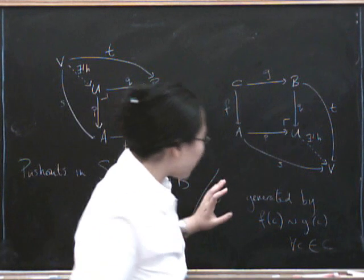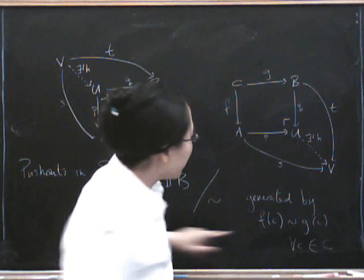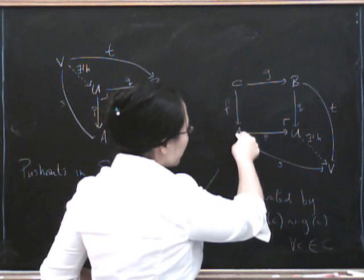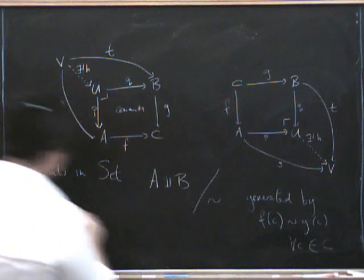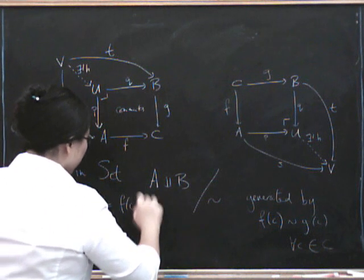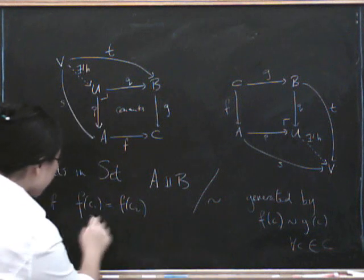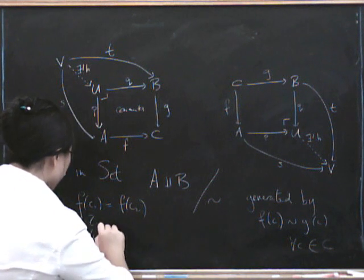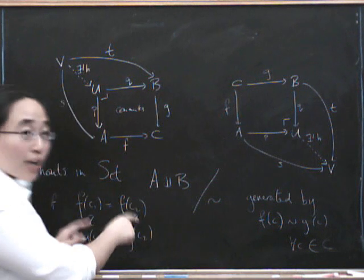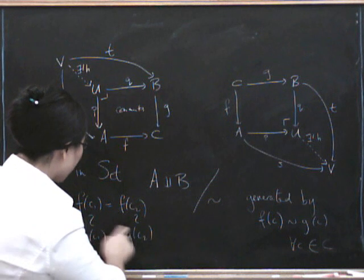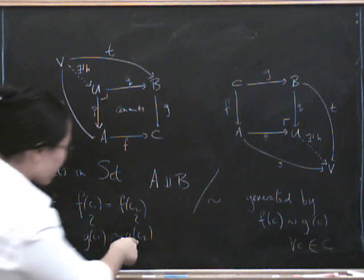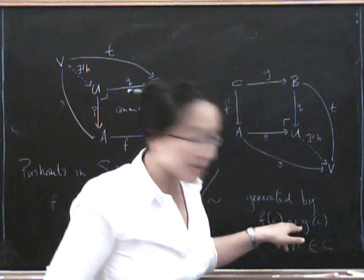Now, when we say generated by, we may have to add some, these won't be all the relations that we have, right? Because if F of C, if F of C1 is equal to F of C2, then that will create some more things that we need. So let me write this over here. So if we have F of C1 is actually equal to F of C2, then according to this equivalence relation, F of C1 is going to have to be equivalent to G of C1, and F of C2 is going to have to be equivalent to G of C2. But because this is an equivalence relation, that means that these two things will have to be equivalent to each other as well.